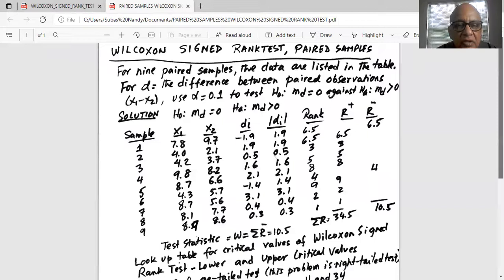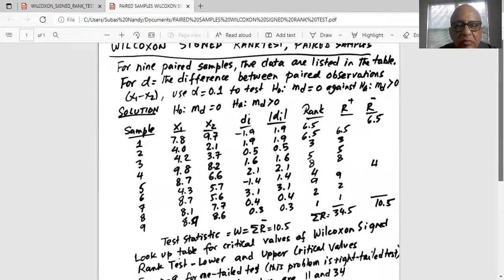Okay, so null hypothesis is median equal to 0, alternate median difference greater than 0. Median equal to 0 means the median of the difference is equal to 0 and the alternate is median of the difference greater than 0.